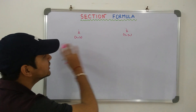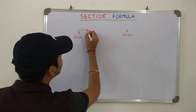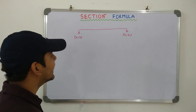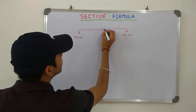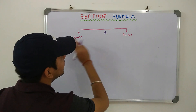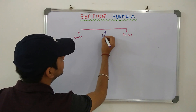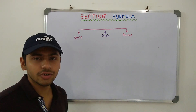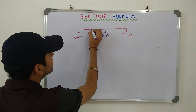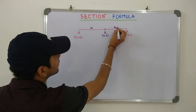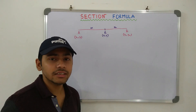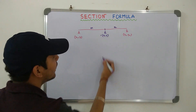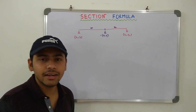What is Section Formula? If I join two points A and B by a straight line, and I take any particular point R in between the two points with the coordinates x, y — this particular point divides the line segment in a particular ratio. Let the ratio be M is to N. Section Formula gives us the ability to find the coordinate of this particular point R, which divides the line segment in a given ratio.